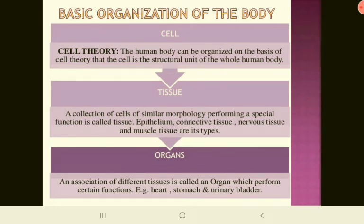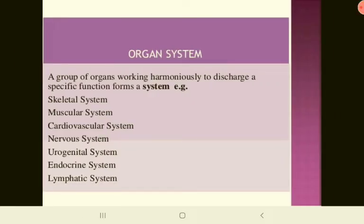The basic organization of the body starts with the cell. Based on cell theory, the cell is the structural unit of the whole human body. Cells combine to form a tissue — a collection of cells of similar morphology performing a special function. Types include epithelium, connective tissue, nervous tissue, and muscle tissue. These tissues come together to form an organ — an association of different tissues performing certain functions. Examples include the heart, stomach, and urinary bladder.